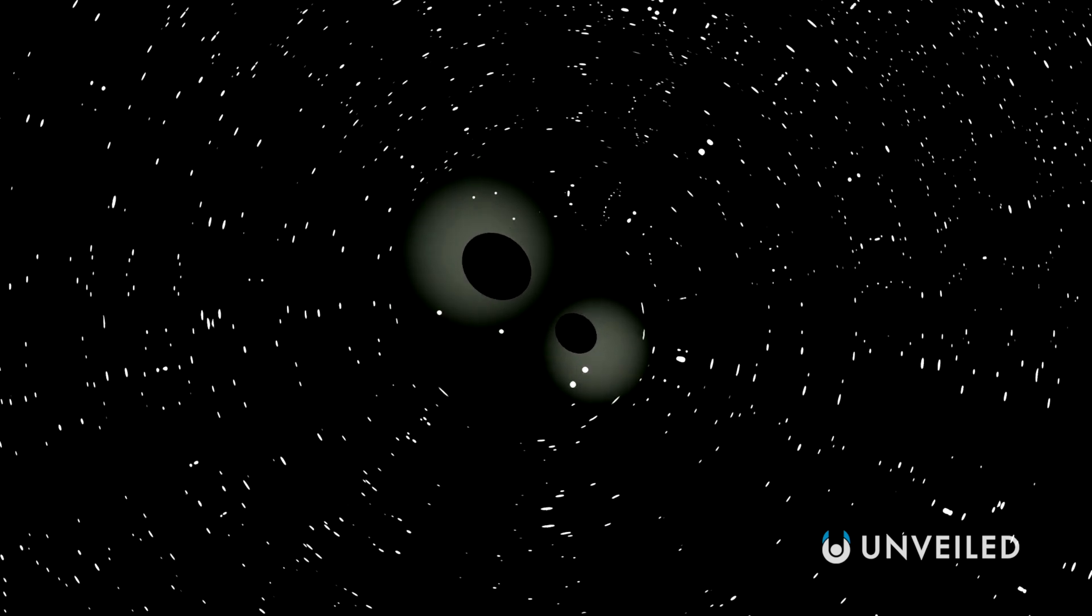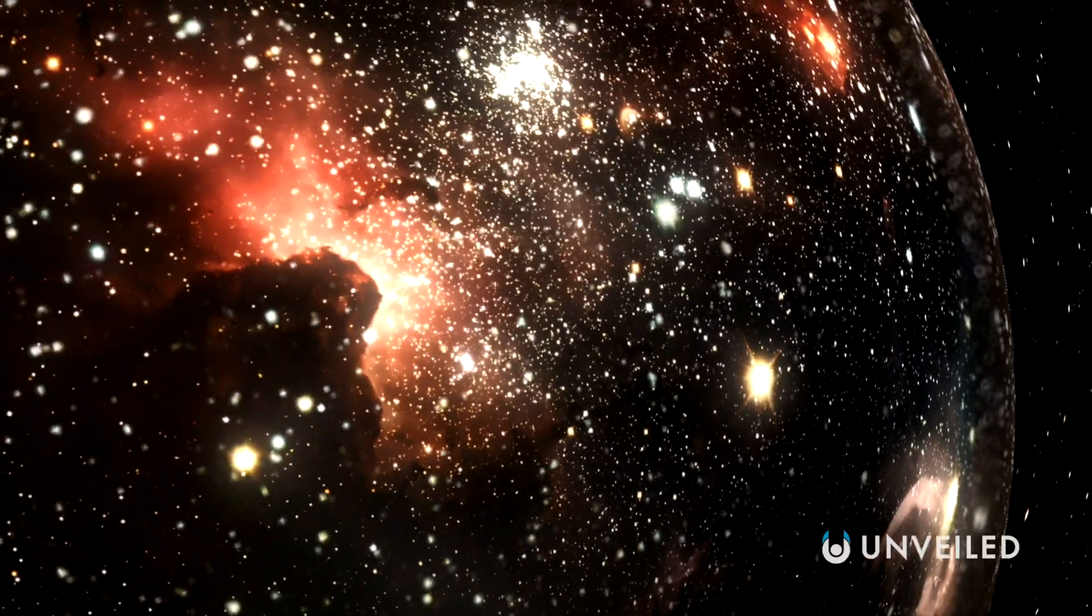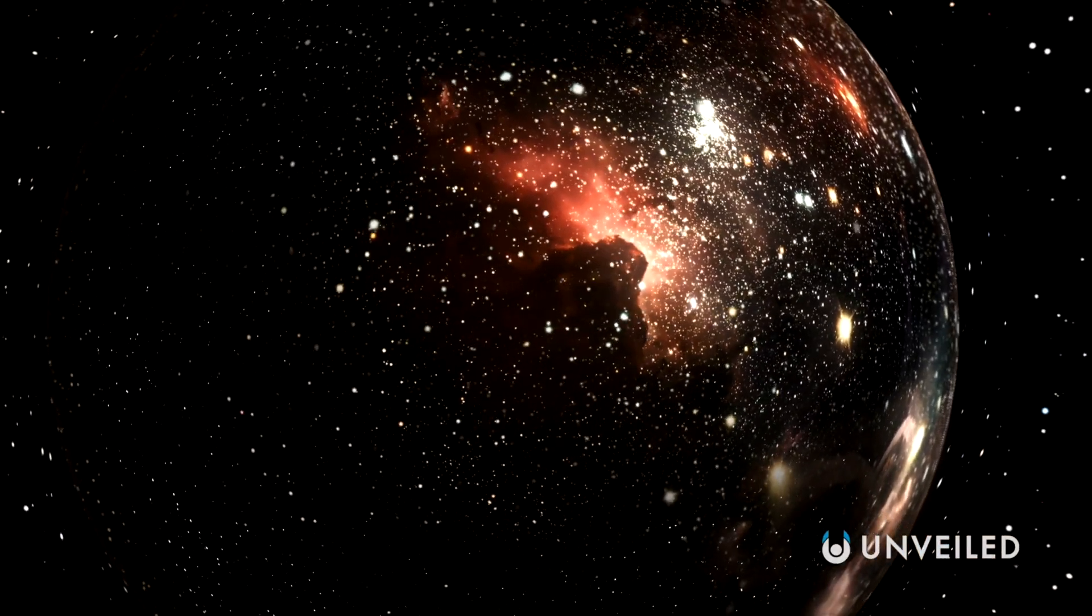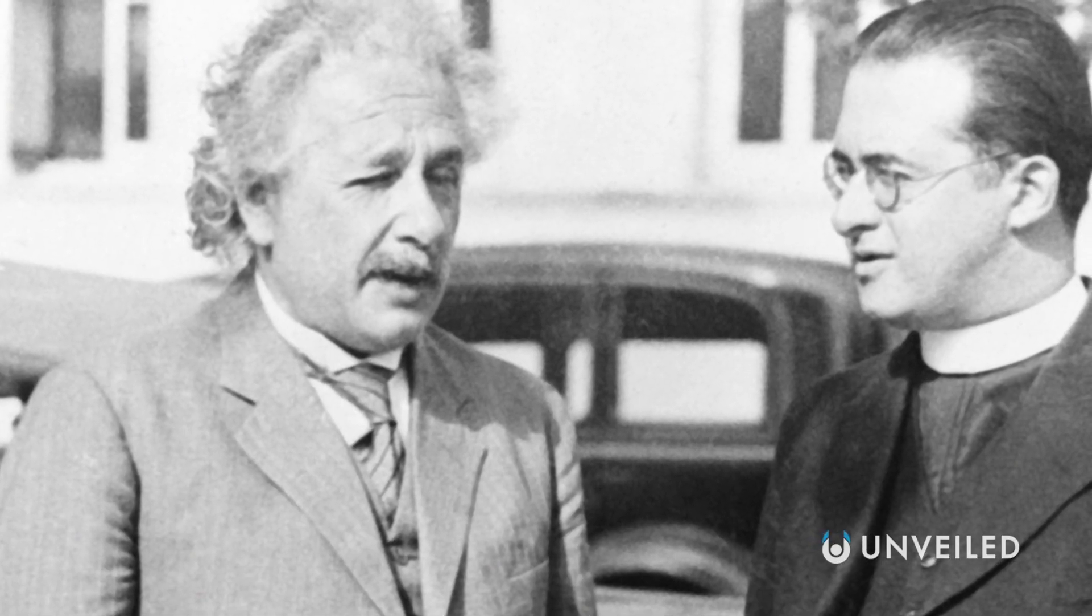And again, this is something of a cornerstone of modern cosmology. One problem with Einstein's ideas, however, was his seeming assumption within them that the universe is static and of finite size. Several years after he published, two other scientists put that assumption to bed: Georges Lemaitre and Alexander Friedman.